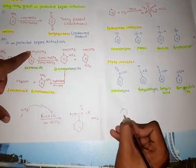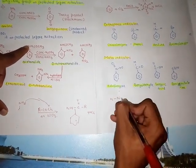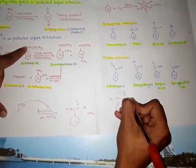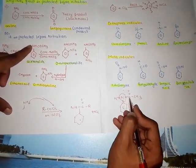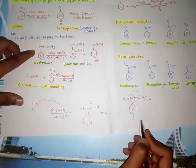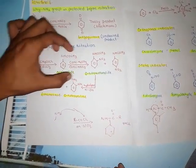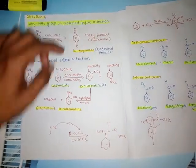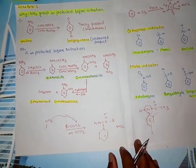In this structure, the central atom has only a single bond, so it is an ortho/para indicator. When nitration is carried out on this compound, substitution occurs first at the ortho position — giving ortho-nitroacetanilide — and also at the para position.